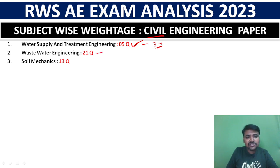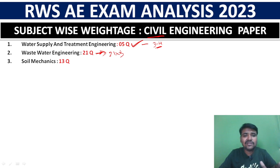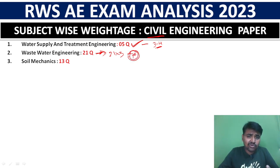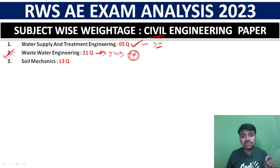Next is wastewater engineering — this is a game-changer. There are 21 questions. At 3 marks each, that is almost 65 to 70 marks from this one subject alone. Wastewater engineering covers both problems and theory with direct questions. The 800 MCQ series is really helpful for this subject.